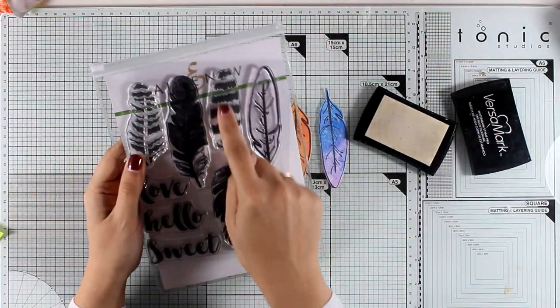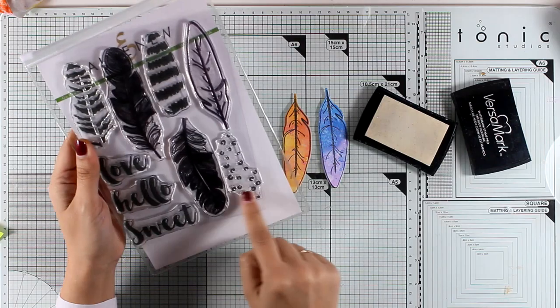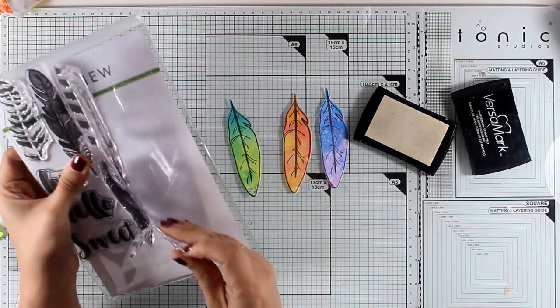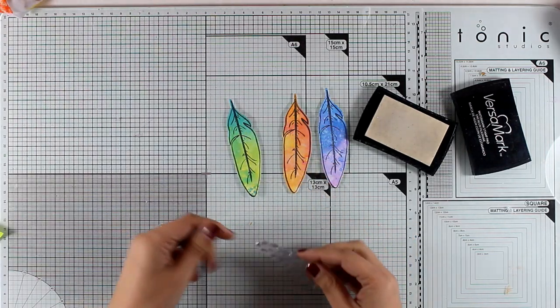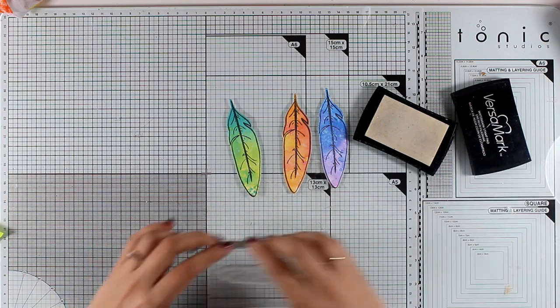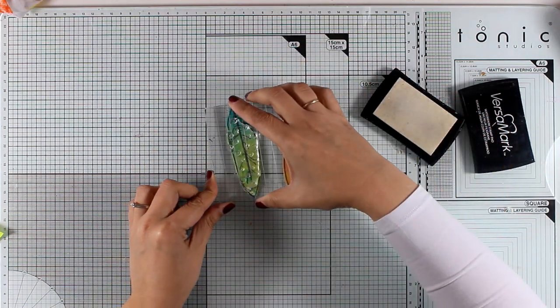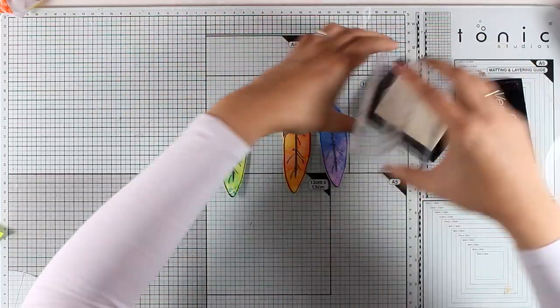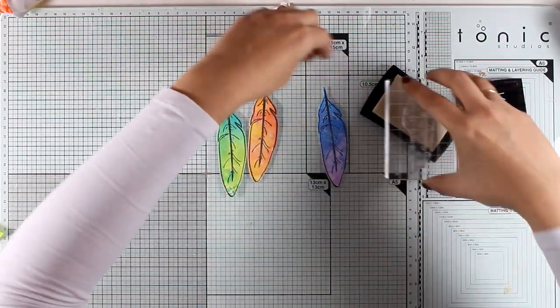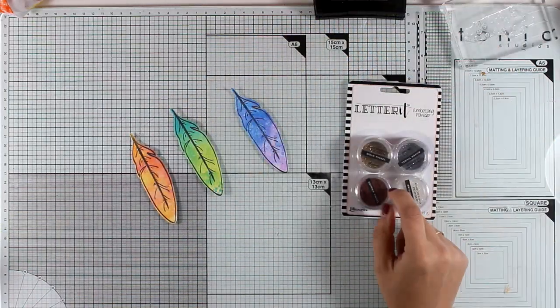Now I'm going to stamp one of the designs that came in the stamp set. There are three different designs actually to embellish your feathers and I'm going with the dots. I'm going to stamp them with VersaMark since I am planning to apply some embossing powder. I'm going to stamp the whole thing but I'm not actually going to add embossing powder all over the place.